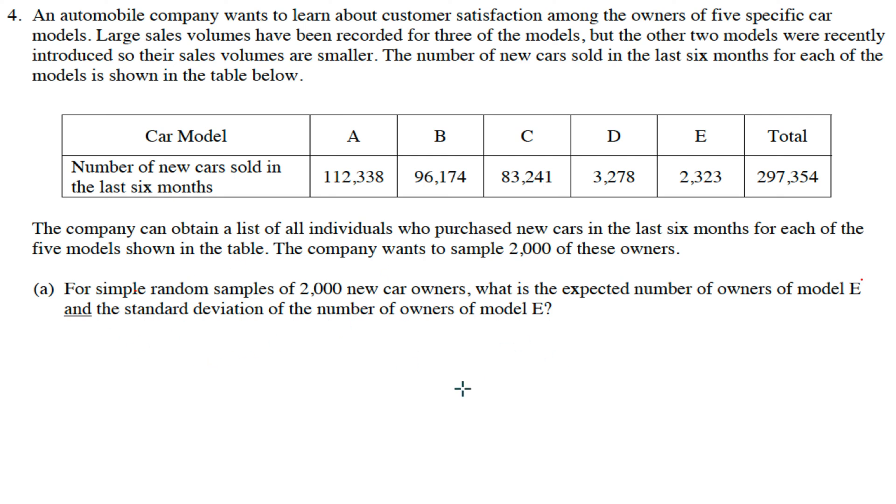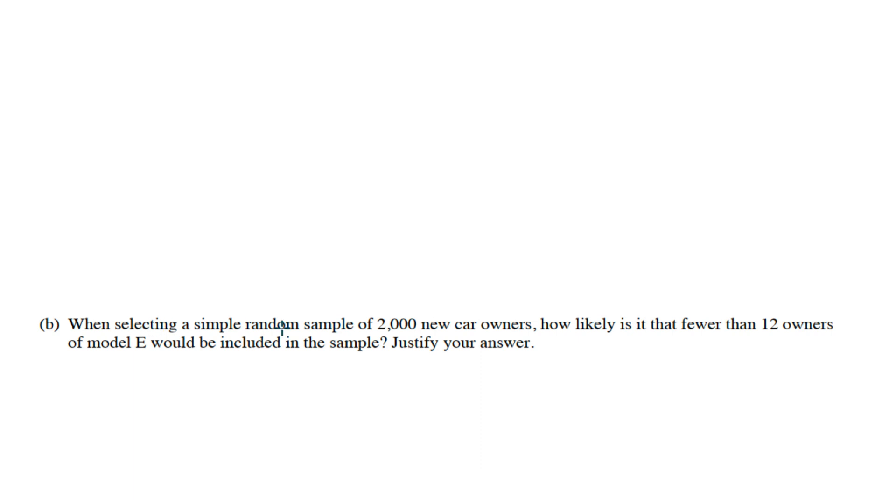The expected number of owners for E, that's not difficult. You could figure that out without having AP Stats. E is this many out of that many, whatever percent that is, that's a proportion. Then you can multiply that by 2000, that's how many you should expect.